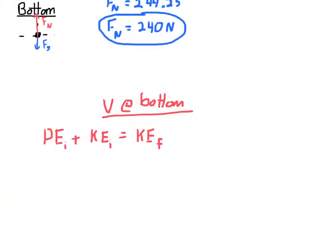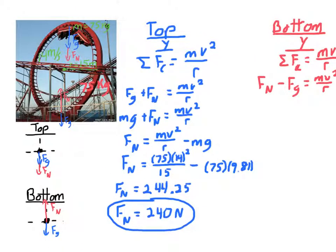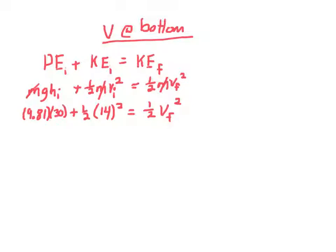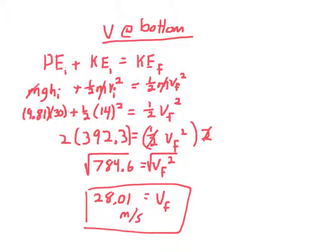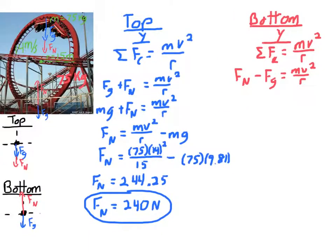Starting from the top of the loop: you have kinetic energy (v_i = 14 m/s) and potential energy (height = 2R = 30 m). All of that converts to kinetic energy at the bottom. Setting up conservation of energy: (1/2)v_i² + gH_i = (1/2)v_f². The masses cancel. Substituting in v_i = 14 m/s and H = 30 m, we solve for v_f and get approximately 28 meters per second at the very bottom.